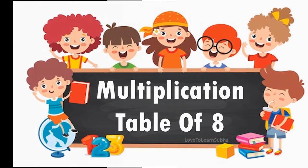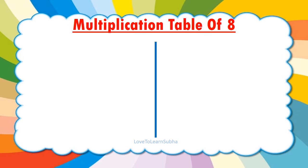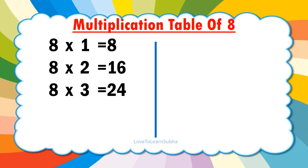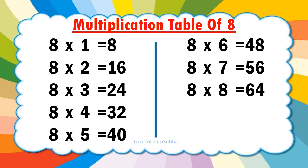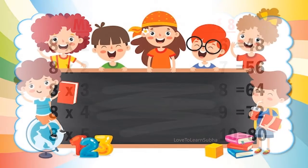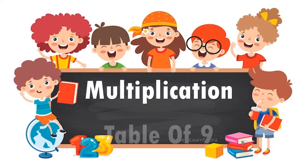Multiplication table of 8. 8 1's are 8. 8 2's are 16. 8 3's are 24. 8 4's are 32. 8 5's are 40. 8 6's are 48. 8 7's are 56. 8 8's are 64. 8 9's are 72. 8 10's are 80.